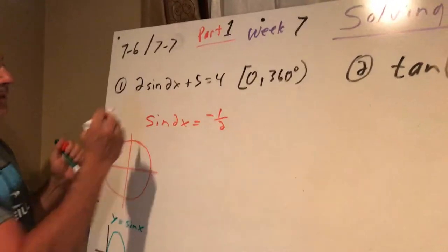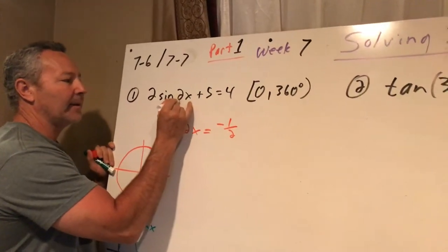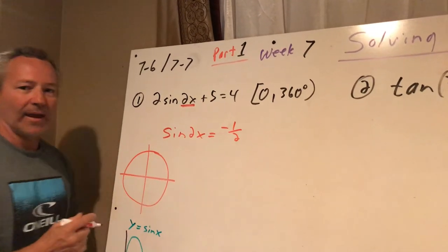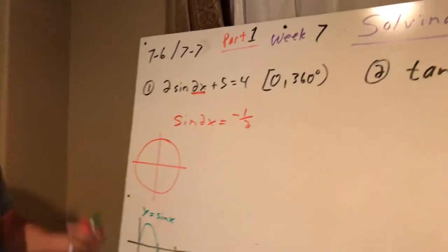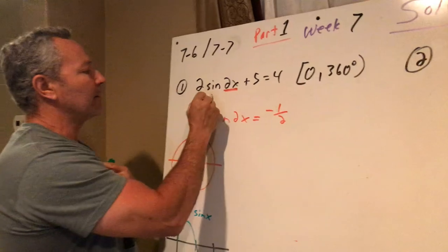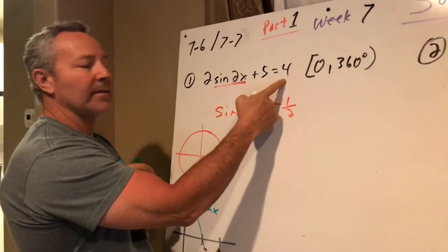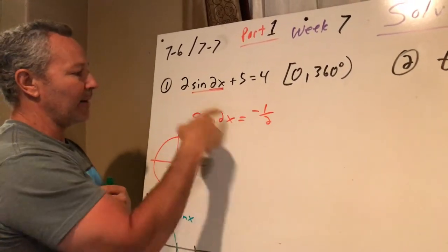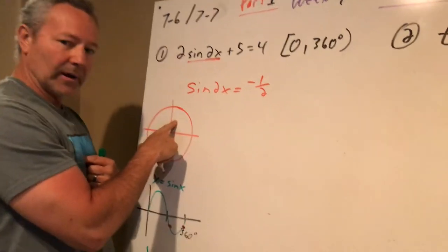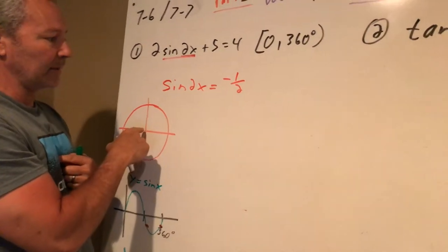So today what we're dealing with is instead of sine of x, this will be 2x. We'll see what changes that implies. So let's go ahead and start on this one. I'm going to get sine of 2x alone. I'm going to minus the 5. I'll give you negative 1 divided by 2. That's negative 1 half. Normally I'd go right over here, which we'll do in a minute, but I want to explain some things here.